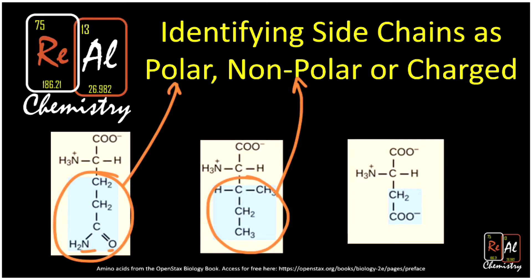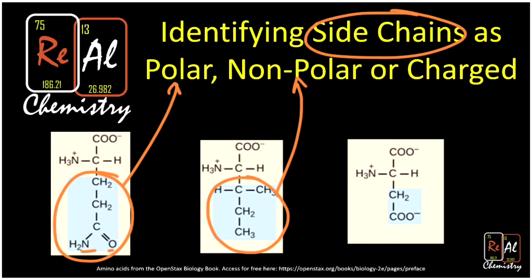That might be a little confusing because you might say, isn't there some oxygen and some nitrogen up there? What that highlights is we're only looking at the side chains. Amino acids as a whole are polar, but we want to identify just what the properties of the side chains are. That turns out to be important because when you combine amino acids into a protein, those side chains will actually interact with each other, and the types of interactions they can do depend on the side chain.